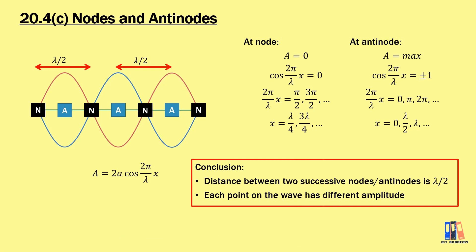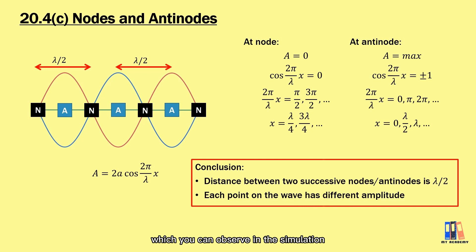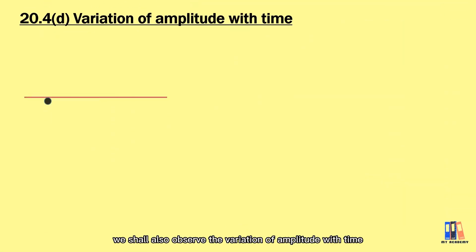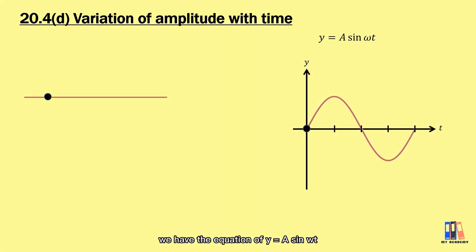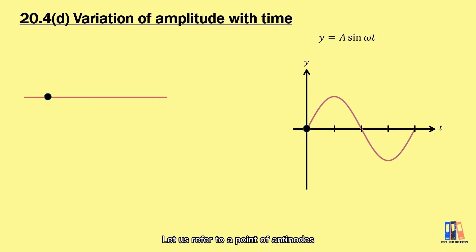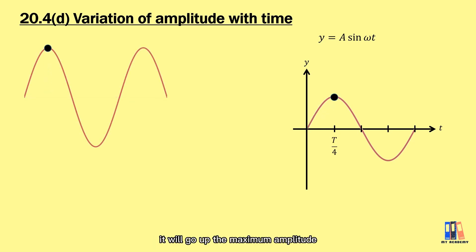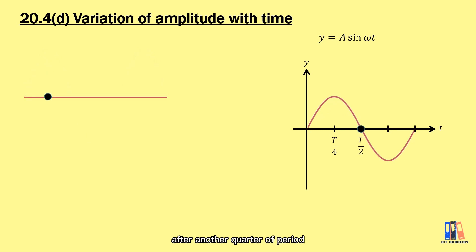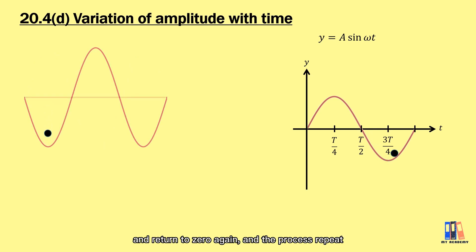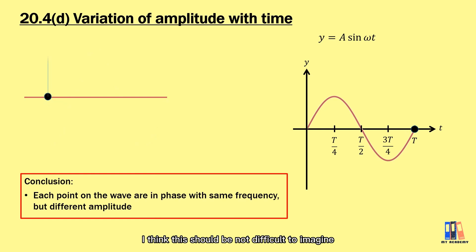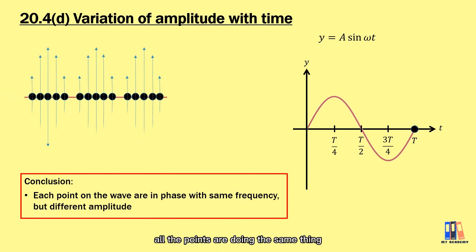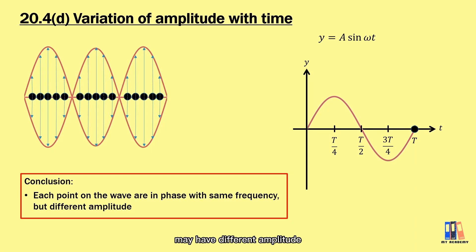Based on the amplitude equation, the amplitude depends on the value of x, meaning each point on the standing wave vibrates with a different amplitude — which you can observe in the simulation. We can also observe the variation of amplitude with time. From the derivation, y = A sin(ωt). Plotting displacement against time, points oscillate up and down. At an antinode, the displacement starts at zero at t = 0, rises to maximum amplitude at one-quarter period, returns to zero, drops to maximum negative amplitude at three-quarter period, and repeats. All points behave the same way and are in phase, but each has a different amplitude — unlike the progressive wave.